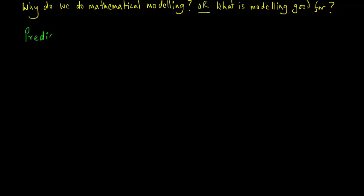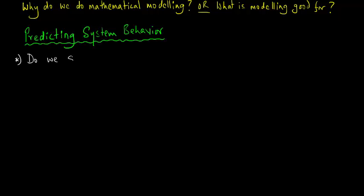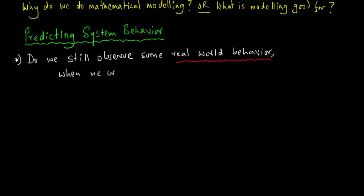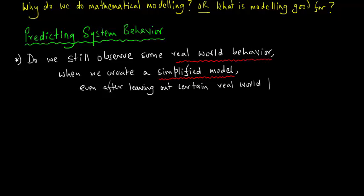We get on to the question of why we actually do mathematical modeling or in other words, what is mathematical modeling good for? One key reason is predicting system behavior. We would like to know whether we can still observe some real world behavior when we create a simplified model even after leaving out certain real world properties.